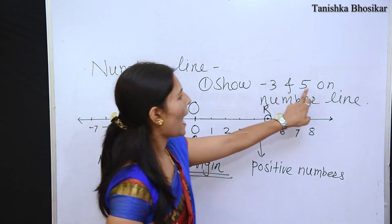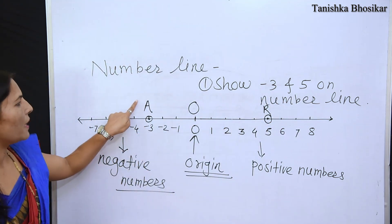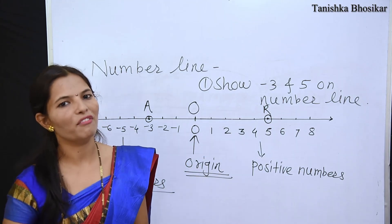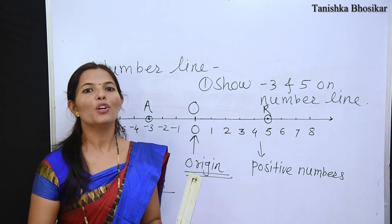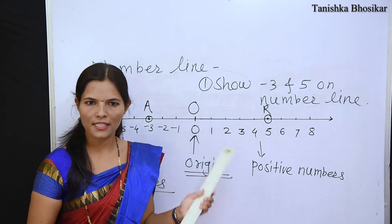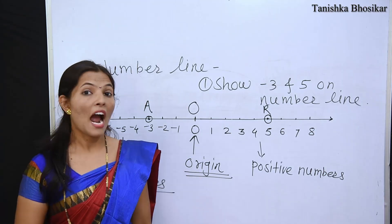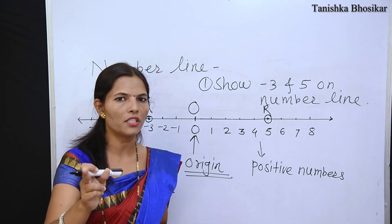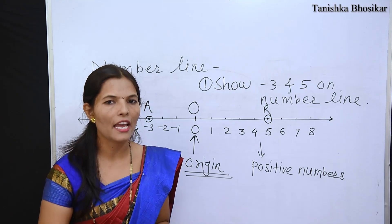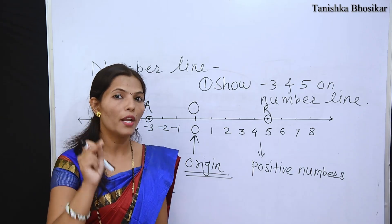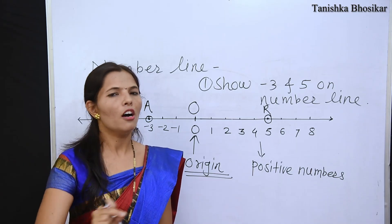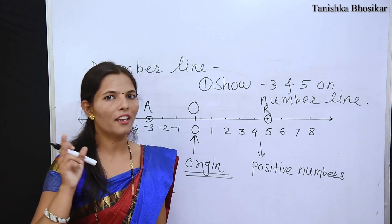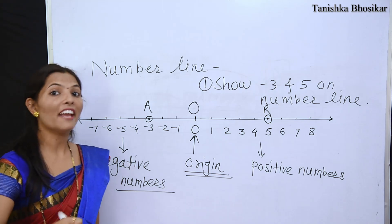In this way you show minus 3 and 5 on the number line by the alphabets A and B. So students, in this way this is the number line and you can show any number on the number line. In the next video you will find more details about the number system.